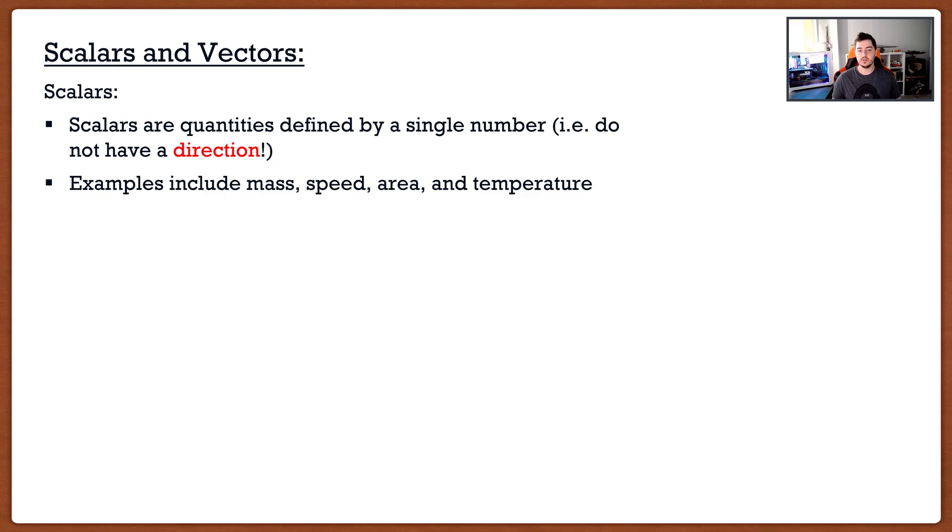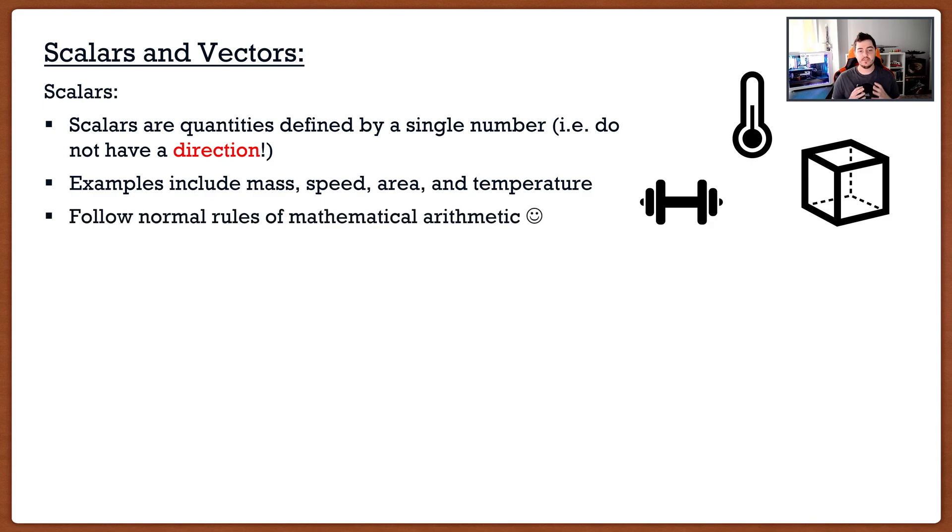Some examples of scalars include mass, speed, area, and temperature. I wouldn't say that my mass is 180 pounds south. It may be going south, but it's not actually directed south. Same with temperature. I wouldn't say it's 40 degrees north. If it does not have a direction, it's a scalar. Scalars follow the normal rules of mathematics. 2 plus 2 is 4, 2 times 2 is 4.